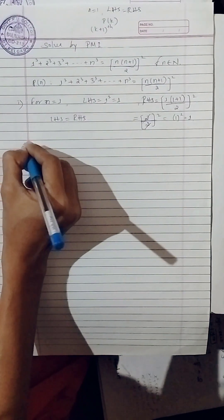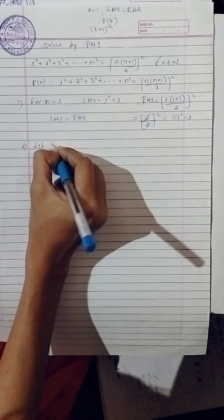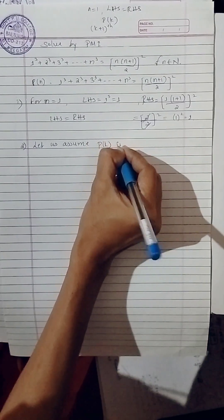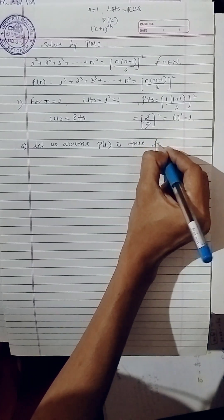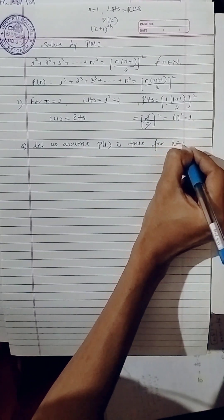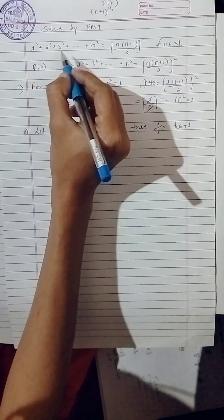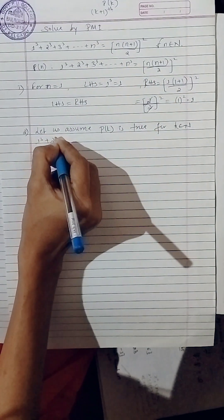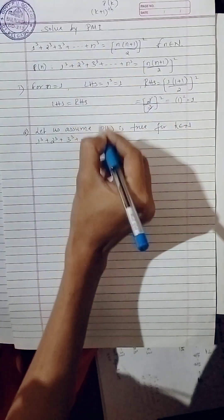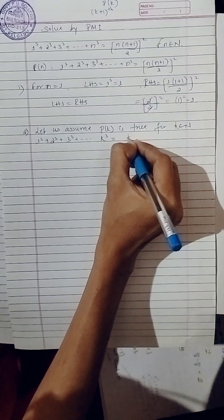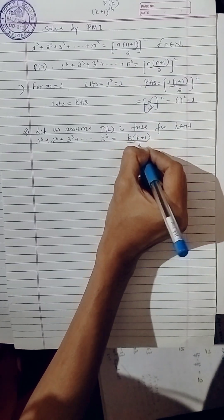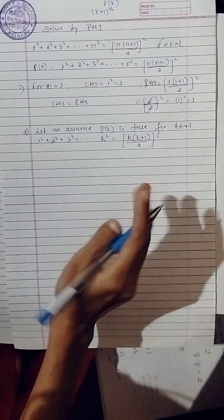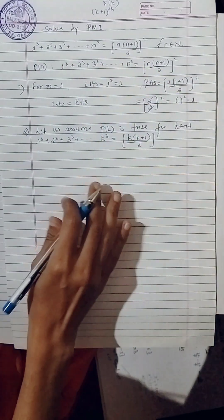Second step: let us assume P of k is true for some natural number k belonging to natural numbers. Simply, in place of n substitute k. The given question becomes: one cube plus two cube plus three cube up to k cube equals k into k plus one divided by two, bracket square.